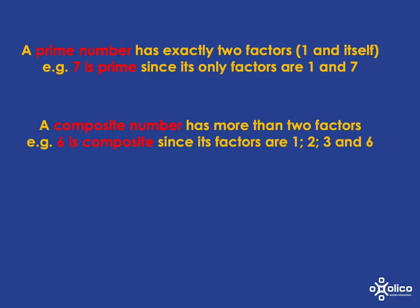In contrast, a composite number does have more than two factors. Six, for example, is composite because it has the obvious factors of one and six, but it also has additional factors on top of that, like two and three.